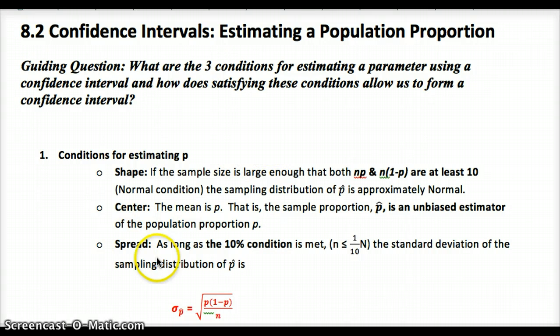And then spread. As long as the 10% condition is met, we can apply this formula for standard deviation. This whole quantity, p times 1 minus p over n, the whole thing square rooted, will give us the standard deviation of p-hat.